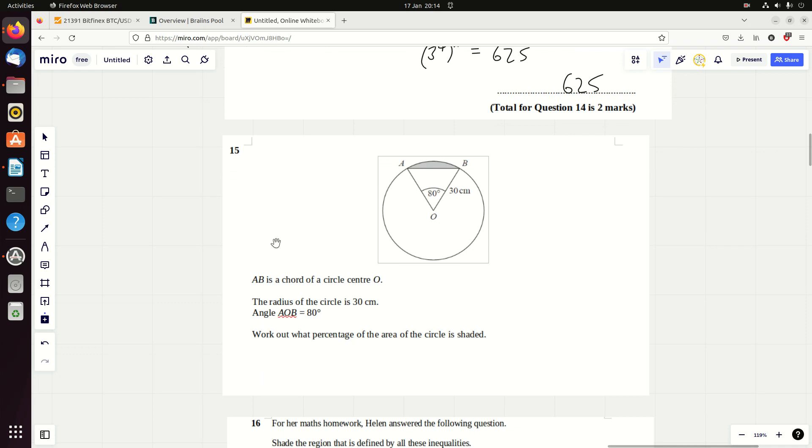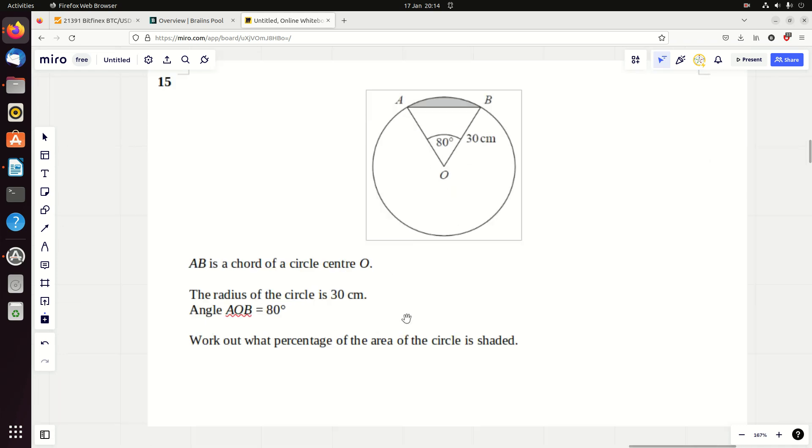Question 15. We've got a circle, and we've got a segment and a sector. They love these kinds of questions. Remember, when you get these kinds of questions, the segment area is always sector minus triangle. The area of the triangle is going to be a half times 30 times 30 times sine 80. That comes to 450 sine 80. Make sure it's in degrees. Mine's in radians at the moment, so I've got to change that. 450 sine 80 gives 443.16.